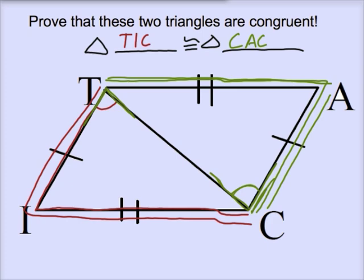I can't spell apparently. C, A, T. So we want to prove that triangle C, A, T and T, I, C are congruent. How are we going to do that?